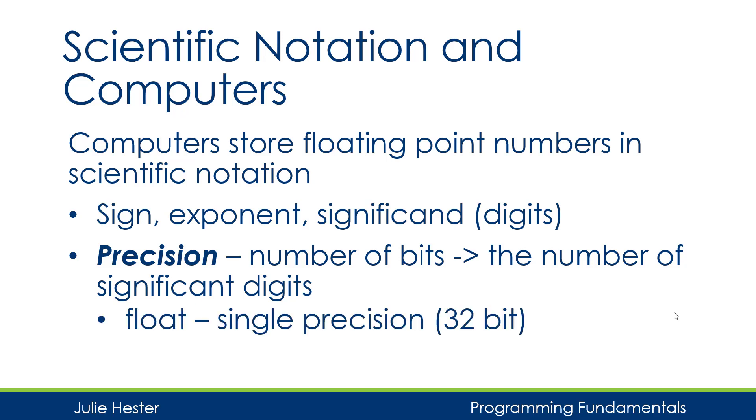So we first worked with floats. Those were single precision numbers that use 32 bits of storage. But in modern programming, we tend to use doubles. And the reason they're called doubles is because they have double the storage of a float. They have double the number of bits available.